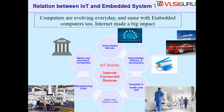A common student question is: what is the relationship between IoT and embedded systems? Computers are evolving every day, and the same is true of embedded computers. One of the largest impacts in the last 10 years is the internet. Prior to that, computers were standalone and not networked. In the last 10 years, almost every computer in the world has got networking capability — you can send emails, messages, browse the web. Computers are no longer standalone devices; they are connected devices.